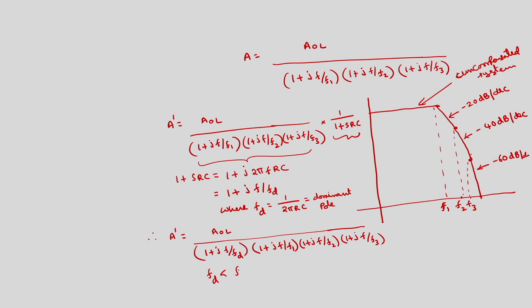Since fd is less than f1 less than f2 less than f3, fd will be somewhere before f1. The compensated network will have a frequency response where instead of having slopes of minus 20, minus 40, and minus 60 dB per decade, we have only minus 20 dB per decade slope up to f1. This is the frequency response of the compensated network.